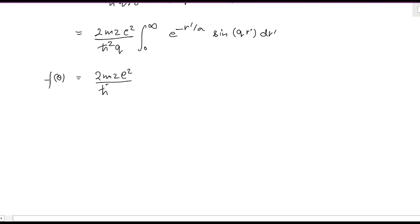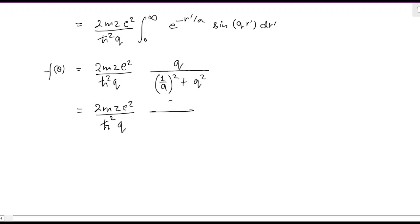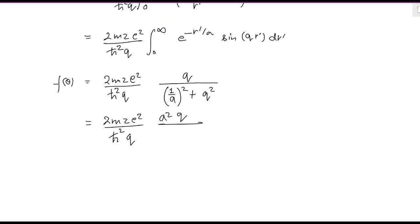The integral evaluates to q divided by (1/a)² plus q², which is a standard result from the formula table. So f(θ) becomes 2m·Z·e² divided by ℏ²·q, multiplied by this result. Taking a² as the common factor in the denominator brings a² into the numerator, leaving us with a² divided by (1 + a²·q²) in the denominator.